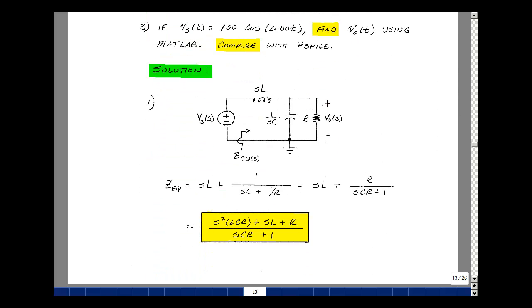Now we can do simple algebra to find the quantities of interest. To find Z equivalent, let's find the parallel combination of these two elements, then add that in series with SL. Things in parallel, their admittances add, so that's SC plus 1 over R. The reciprocal gives the impedance, which is in series with SL. Multiplying numerator and denominator by R gives R over SCR plus 1. Finding a common denominator and multiplying by SL, we get S squared LCR plus SL plus R. So this is Z equivalent as a function of S.